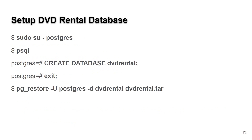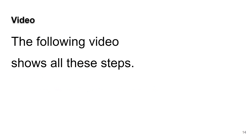Now we set up the database. Run sudo su - postgres to become the postgres user, which was created during installation. Then type psql — the command line client — and you'll notice the prompt changes to 'postgres=#'. From there, run CREATE DATABASE dvdrental; and exit. Then run pg_restore -U postgres -d dvdrental /tmp/dvdrental.tar, pointing it to wherever you put the tar file. The video at the end of the slideshow will show you all of that being done.